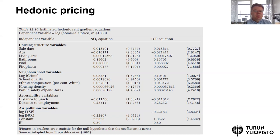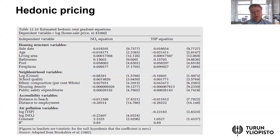With hedonic pricing, we explain the price of an apartment or house based on its attributes or characteristics. For example, the age of the house, area in square meters, and amenities such as a pool or fireplace — or in Finland, perhaps a balcony or sauna. Besides apartment-specific factors, there can also be neighborhood-related factors such as school quality, ethnic composition, crime rates, and so on.